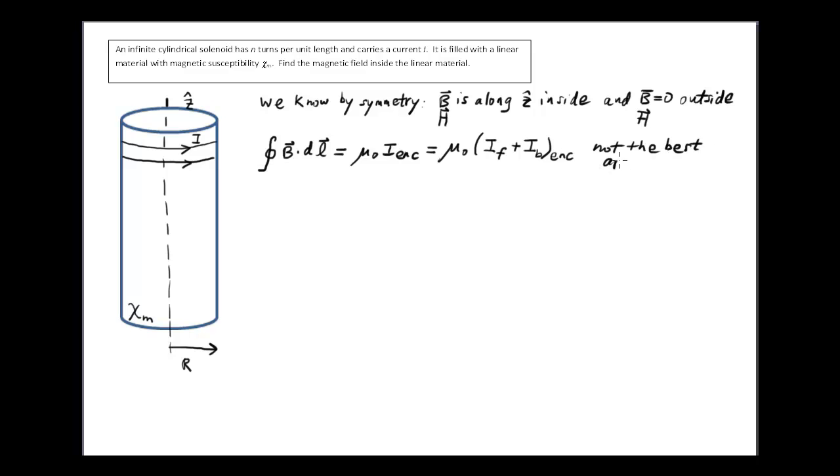Whenever you have a magnetic material you're going to want to use Ampere's law in the form integral around a closed loop of H dot dl is equal to I free enclosed. That will be the easiest way to do it. So we'll do that first. That's what's appropriate for this problem.